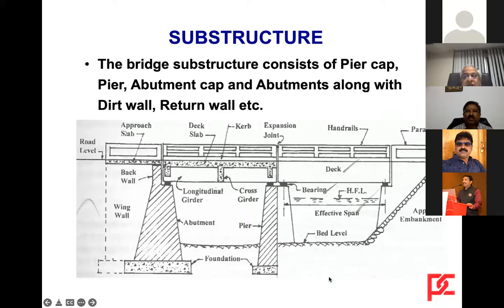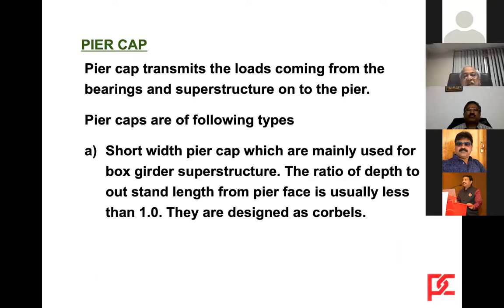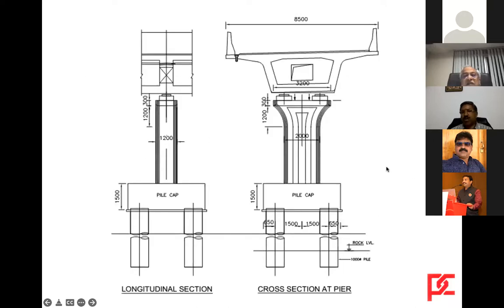The pier cap transmits loads coming from the bearings and superstructure onto the pier. Pier caps are of different types. Short-width pier caps are mainly used for box girder superstructures, where the ratio of depth to outside length of the pier face is less than one — in which case they are designed as corbels. This is a typical corbel pier cap, where the bearings are not far apart compared to a girder bridge, which requires a smaller pier cap width.